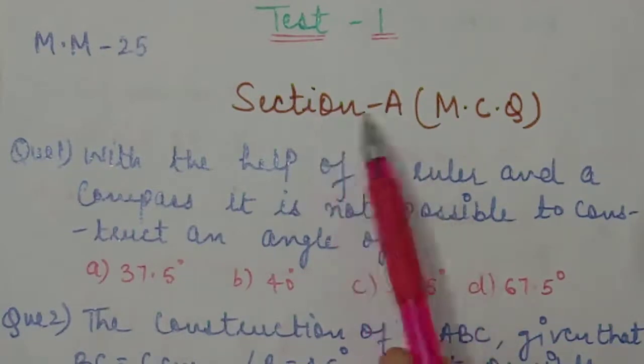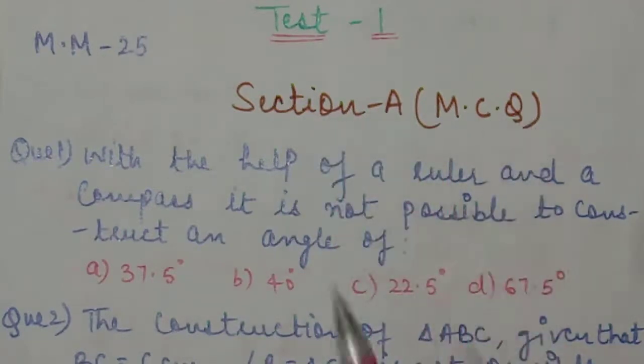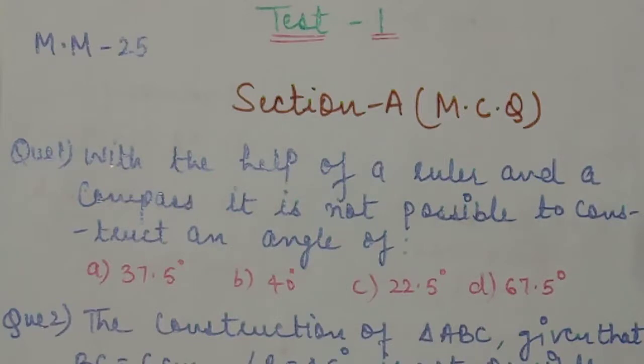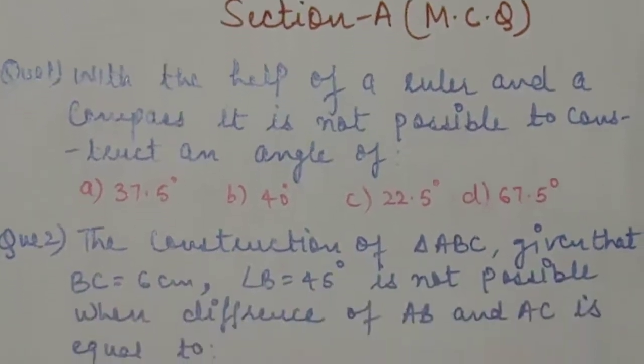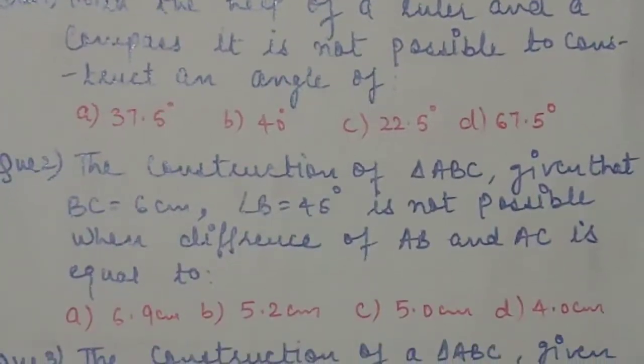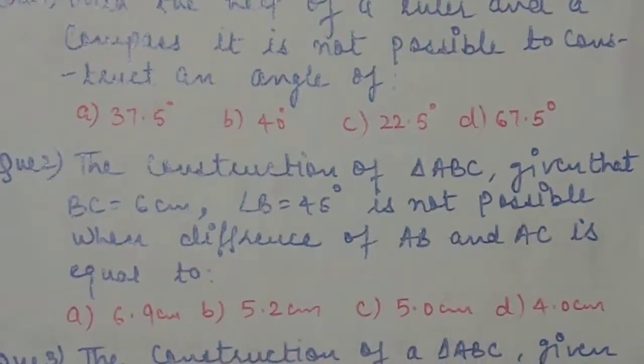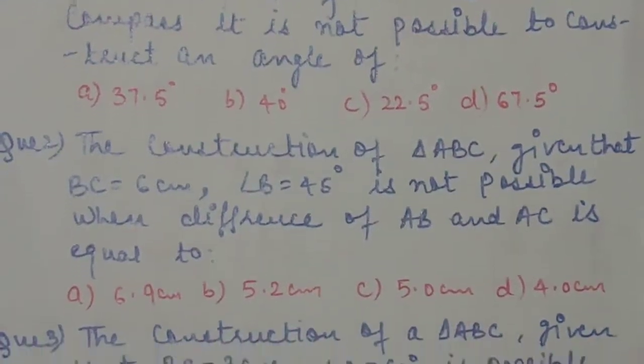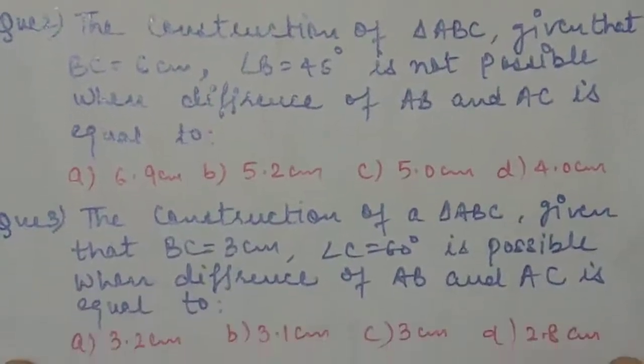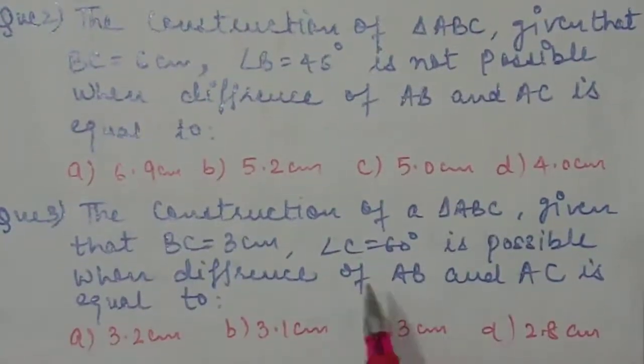Section A is MCQ, one mark question. This is your first question with all four options. This is your second question with all four options. This is your third question with all four options.